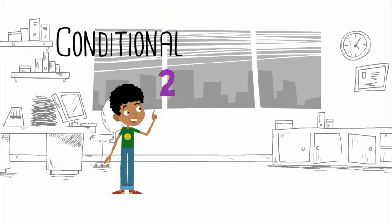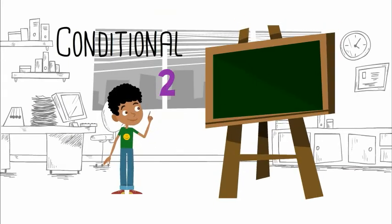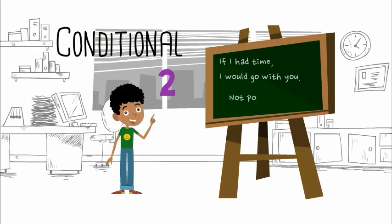Conditional two. Do you see the difference? Gemma wants to go, but it's not possible. She doesn't have time. Gemma uses the simple past, had, plus would and infinitive, would go. This way she says that this will not happen.